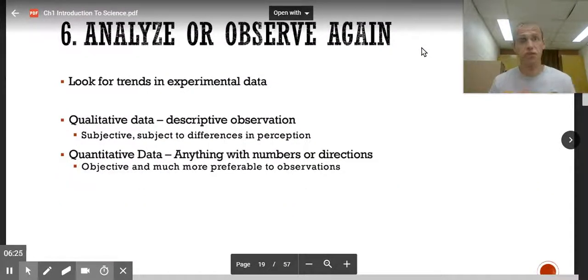Once you test your hypothesis, we're going to analyze and observe again. Look for trends in the data that you collected. There are qualitative data and quantitative data. Qualitative data is very descriptive. So you might write down, it changed from red to blue, it changed from big to small. It's like written out stuff. Quantitative data is actual number data, measurements, the displacement of water. Quantitative has numbers, qualitative has qualities.